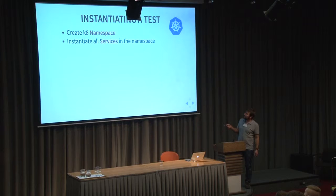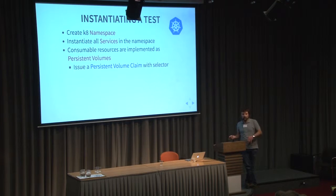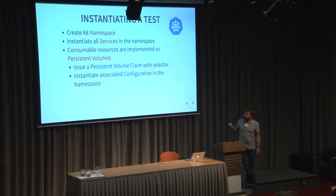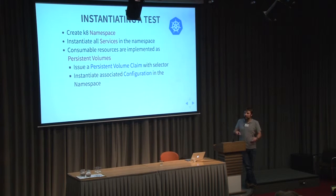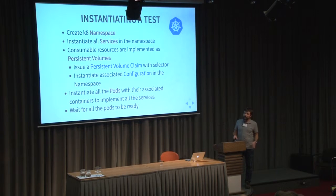To instantiate a test, you create the namespace, instantiate all the services, and consume the resources you need. If you need a local object store and an Oracle database, you can do that easily. You instantiate the configuration from the persistent volume into the namespace so you can configure the services and pods. Then you instantiate all the pods with the associated containers to implement all the services, and you wait for the pods to be ready so you can run the system tests.